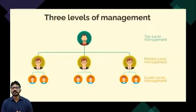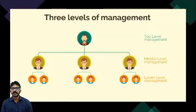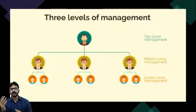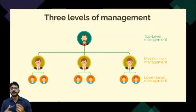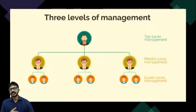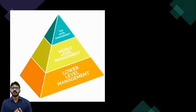Now that we know what management is, its functions, nature, characteristics, and the roles played by managers, it is necessary for us to know the different levels of management. Any organization will have three levels of management as shown in the figure. The topmost is top level management, where directors or chairmen are present; middle level management, where department heads are present; and lower level management at the bottom of the pyramid, which is the supervisory level.